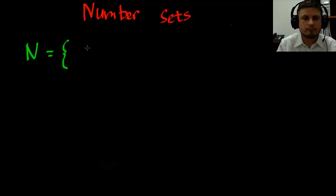So let's start with the first number set and that's N natural numbers. And that's essentially everything from 0 to 1, 2, 3 and so on but only the whole numbers. And as you can see not the negative numbers. So natural numbers are essentially this.